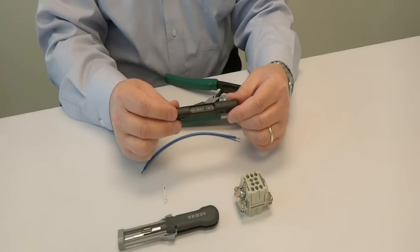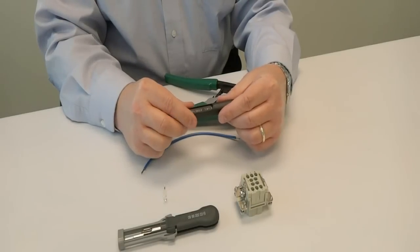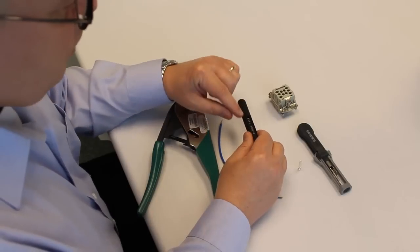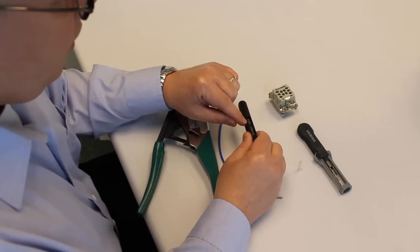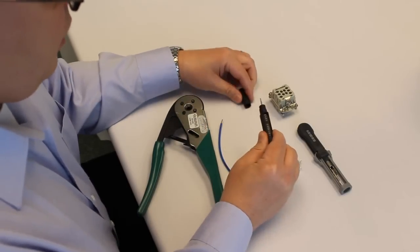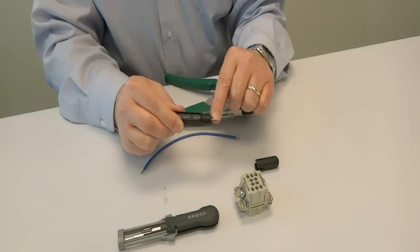For that purpose, we have an adjustment gauge. It's sold along with the tool. In this case, we need to use the 1.8 millimeter setting. So we're going to take the gauge for that 1.8 millimeter size and use it to adjust the tool.